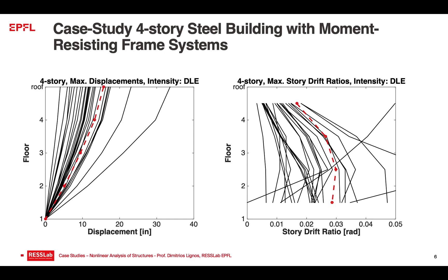Other than that, predicting the behavior with different types of models did not affect much the responses at this level of intensity. However, participants that used distributed plasticity models were better able to trace the response near yielding, because a spring-like model with a multilinear response cannot trace yielding initiation very well — it has a distinct change between the elastic and post-yield branches.